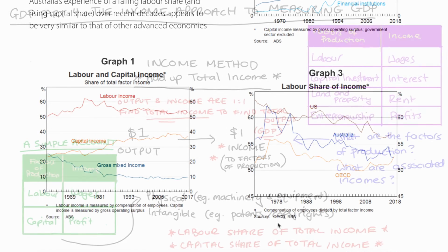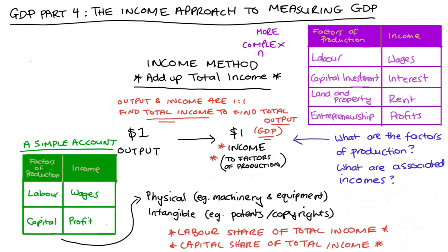Back to our discussion about the income approach — more complicated accounts will break our total income and our factors of production up into finer categories. For instance, in the top right-hand corner here I have an account with four factors of production: labor, capital investments, land, and entrepreneurship. Here wages will be the income associated with labor, interest will be the income associated with capital investments, rents are earned on land and property, and the residual — termed profits, which you might see as dividends — goes to entrepreneurship. So if your course presents the factors of production in this way, finding GDP would involve adding up total wages, interest, rents, and profits.